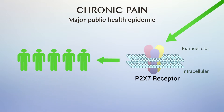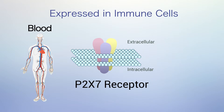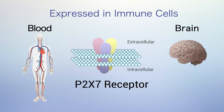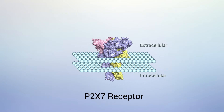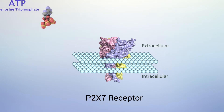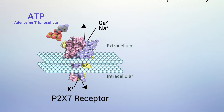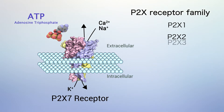The chronic activation of the P2X7 receptor underlies this pathology. The P2X7 receptor is predominantly expressed in immune cells of the blood and the brain, and is a trimeric cation channel activated by extracellular adenosine triphosphate (ATP), although it belongs to the P2X receptor family.